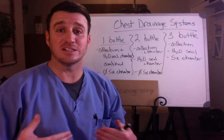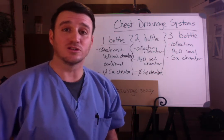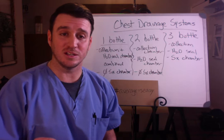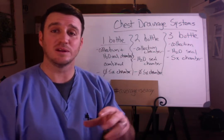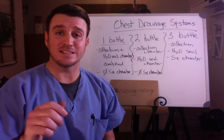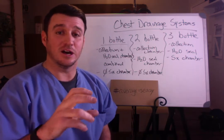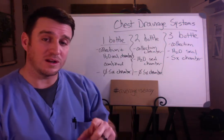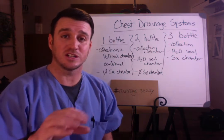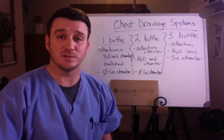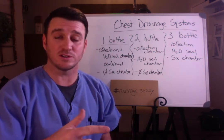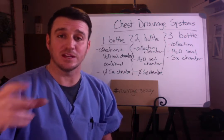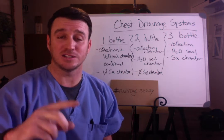If you put a chest tube in and leave it open to atmosphere, every time the patient takes a breath you're going to draw air into the pleural space — essentially creating a pneumothorax. The water seal prevents that. The water seal in all three systems should be two centimeters below water. Also note there is no suction control chamber in the one-bottle system.